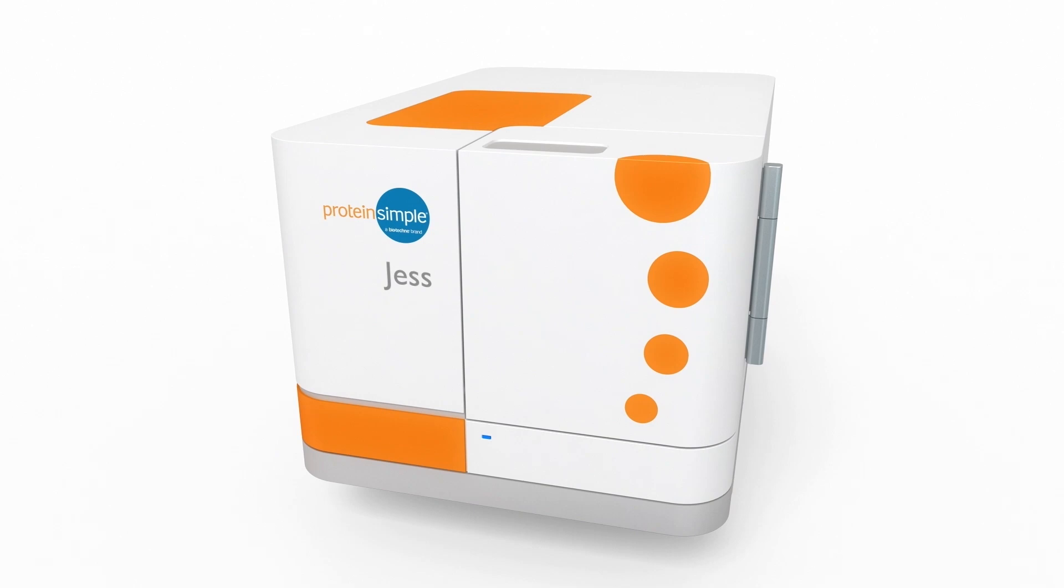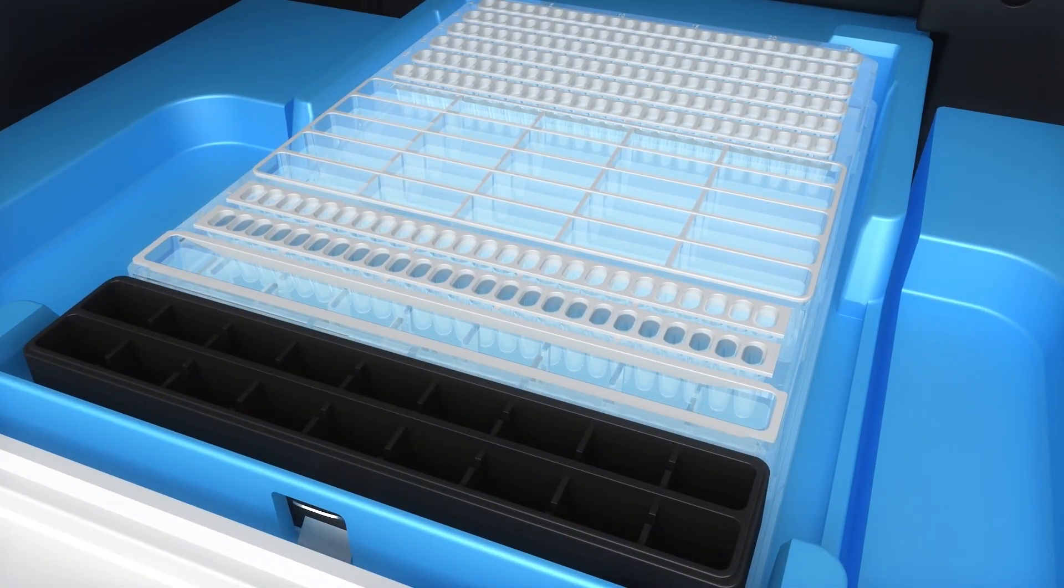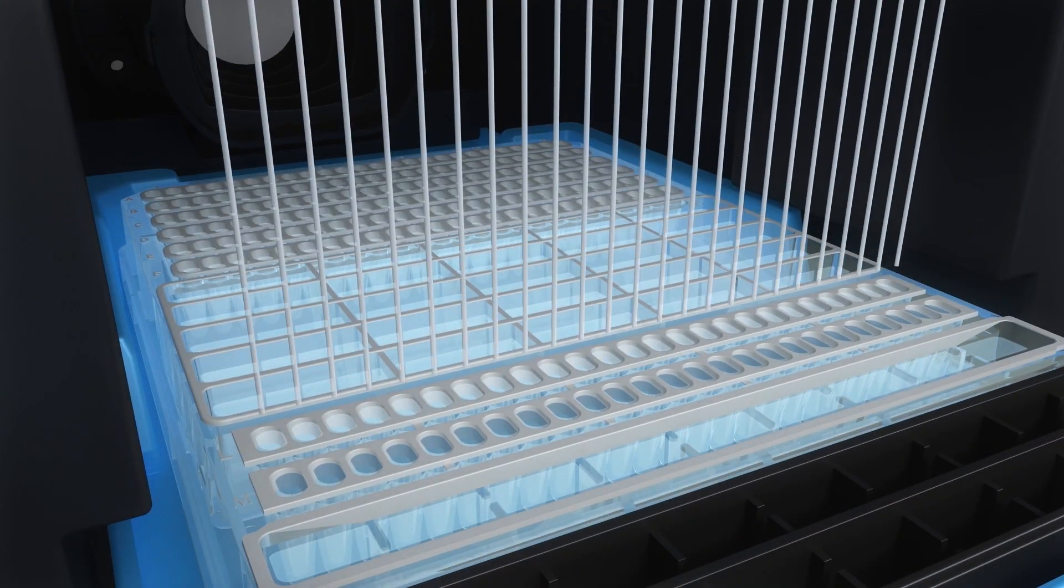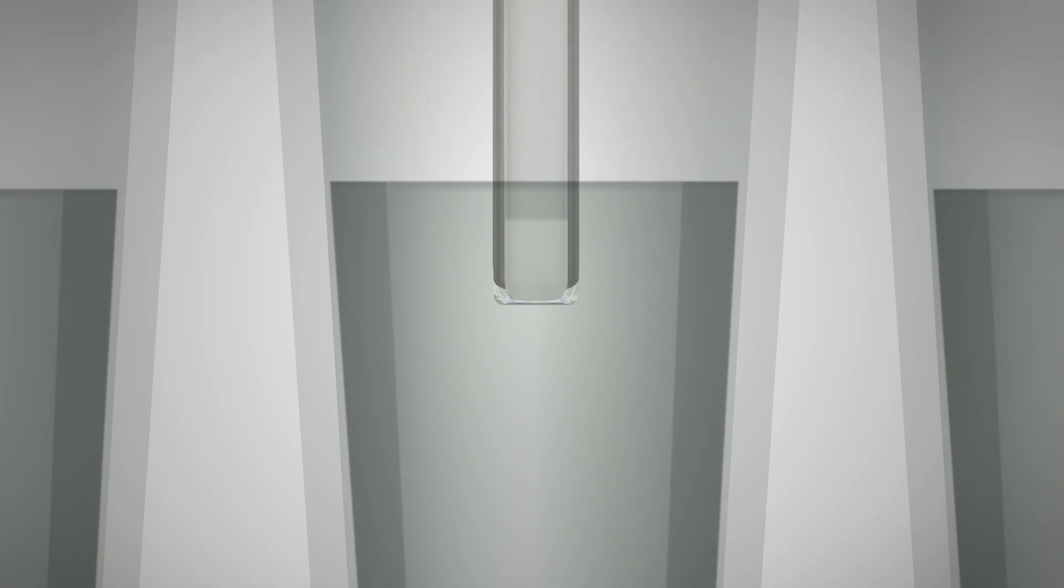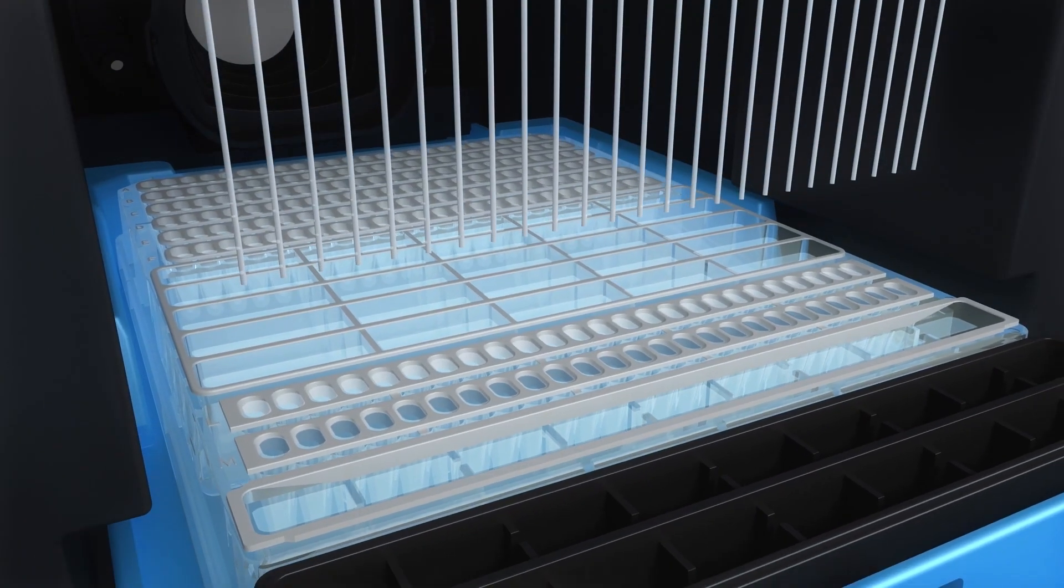Simple Western immunoassays take place in a capillary. Your sample, separation matrix, stacking matrix, antibodies, and reagents are loaded automatically from a specially designed plate.